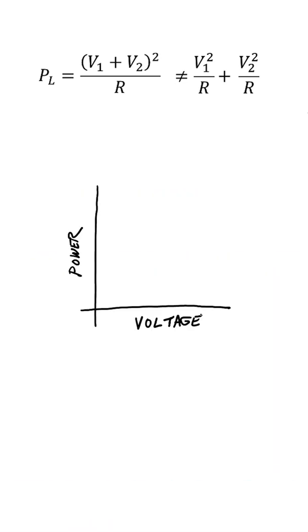If you plot power versus voltage, you'll get a parabola, not a line. You can only use superposition for things that are linear.